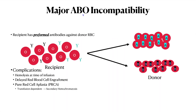Let's talk about major ABO incompatibility. This is when the recipient has preformed antibodies against donor red blood cells. As you can see, the teal blue is anti-A because A is teal blue, and the black Y is anti-B because B is decoded in black. The complications are: once you get the donor cells, there can be hemolysis at time of infusion because of these preformed antibodies, delayed red blood cell engraftment, and pure red cell aplasia, which is less than 1% reticulocytes over several months.